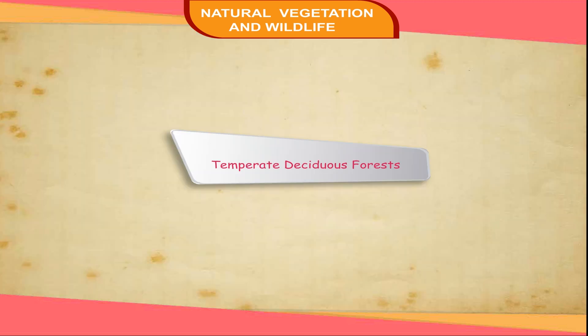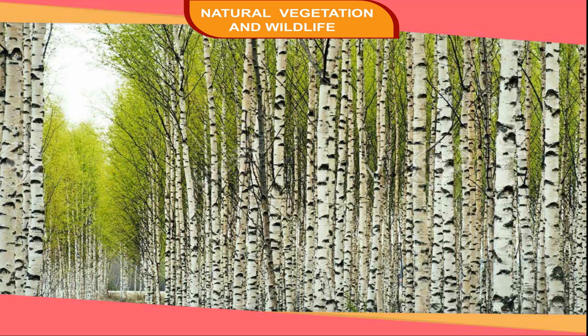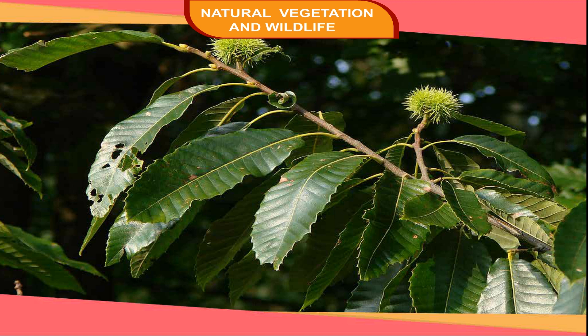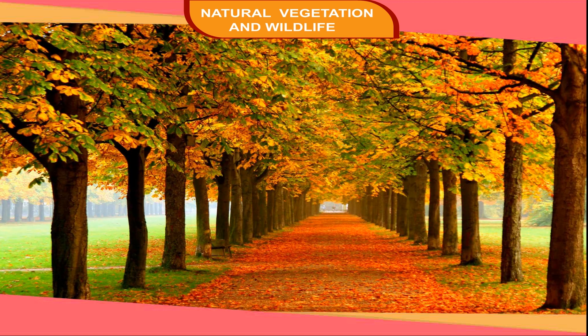Temperate Deciduous Forests. These are regions having moderate temperature and rainfall. When it gets cold in autumn, these trees shed their leaves. In the USA, the season when these trees shed their leaves is called fall. Common trees are maple, walnut, birch, and chestnut. The wildlife consists of deer, foxes, and wolves. The areas covered by such forests are northeastern USA, northeastern China, Japan, southern Chile, and New Zealand.